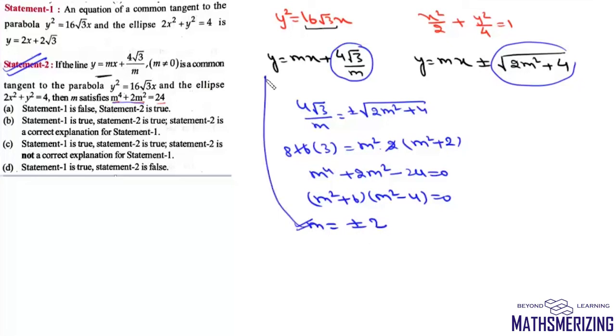Now we'll put the value of m. We can write the equation of tangent as y = ±2x ± 2√3. So one of the tangents is y = 2x + 2√3, which means statement 1 is also correct.